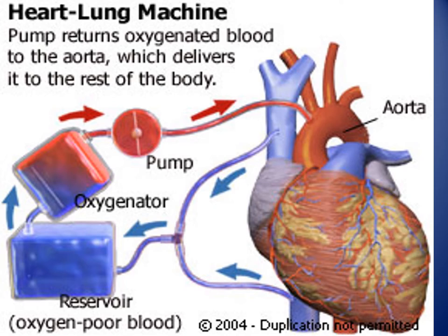This image shows a simplified heart-lung machine. Two venous cannulas from the superior vena cava and inferior vena cava collect blood to the reservoir, which is then pushed to the oxygenator, then to the aortic cannula to perfuse the body during heart surgery. The pump returns oxygenated blood to the aorta, which delivers it to the rest of the body.